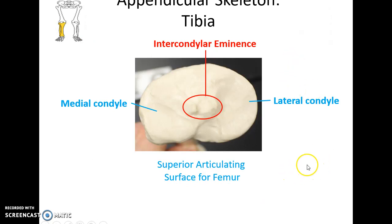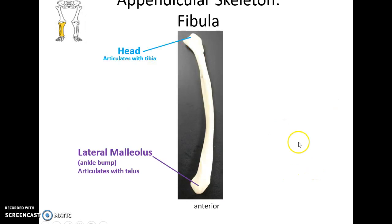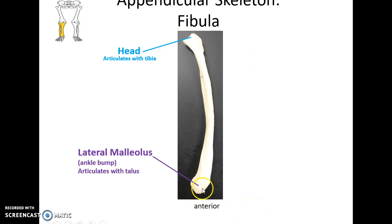Looking at the top of the tibia — intercondylar eminence between the medial and lateral condyles. At the distal end there is a little depression called the fibular notch where the fibula passes through. The fibula is a long skinny bone that does not bear weight. It has the head of the fibula at the proximal end and a rough rounded area called the lateral malleolus at the distal end.